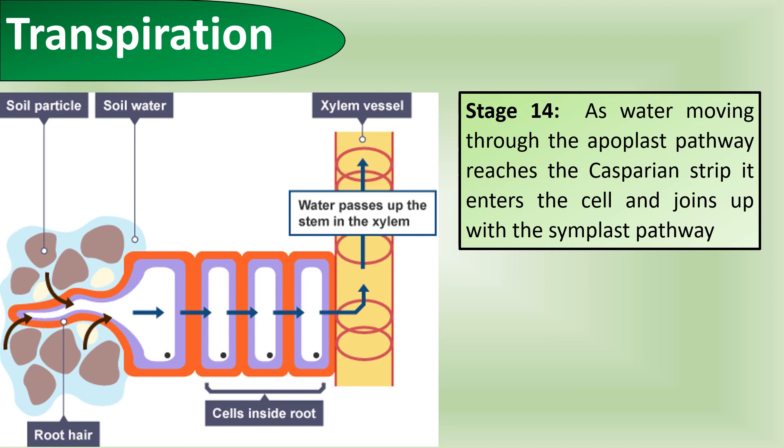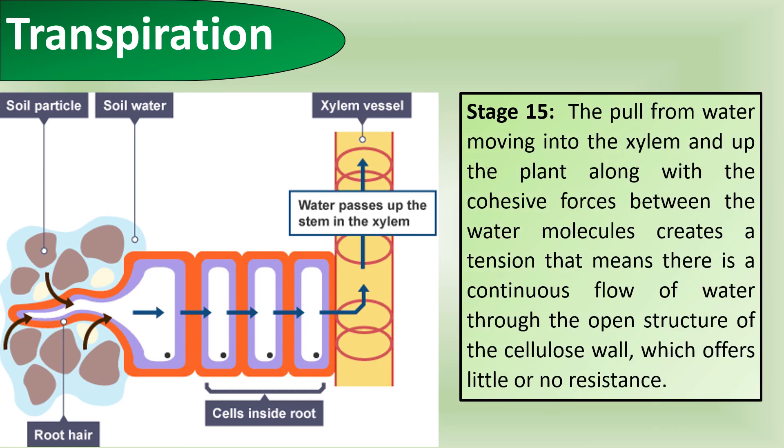It must do this because you require some sort of cellulose or some sort of bridge to enter the xylem that takes it over that waterproof membrane. The pull from water moving into the xylem and up the plant, along with the cohesive forces between water molecules, creates a tension that means there is a continuous flow of water through the open structure of the cellulose wall, which offers little or no resistance.